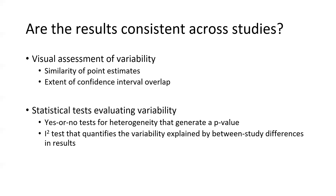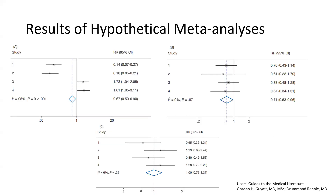Are the results consistent across studies? There are two ways to assess this. First, we can visually assess results for variability. Second, there are statistical tests. Looking at an example forest plot: the dots are the point estimates of each independent RCT, and the lines through them show the confidence intervals. Here we see four trials — two favor treatment very well and two do not — and both sets of confidence intervals are not crossing the line of no difference.